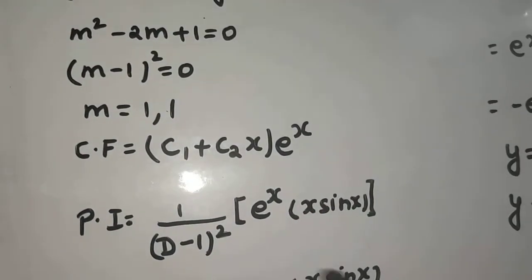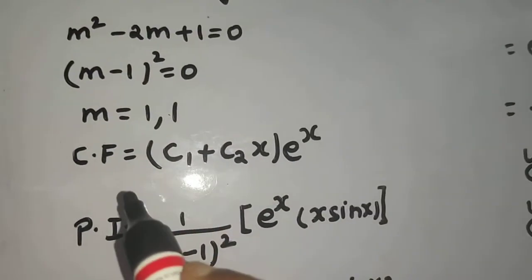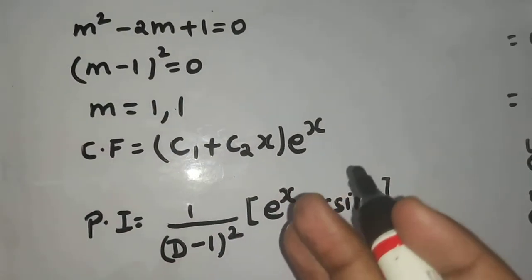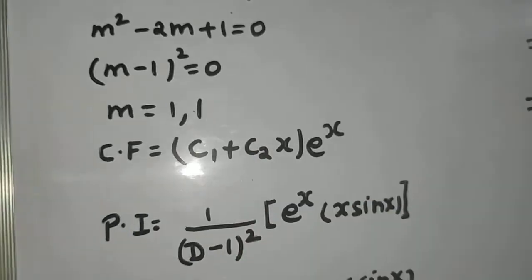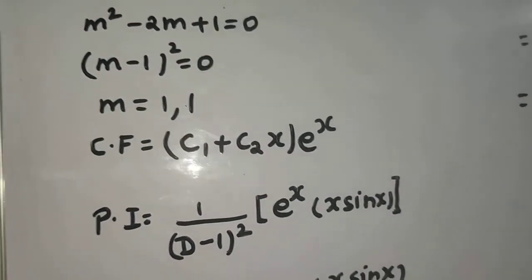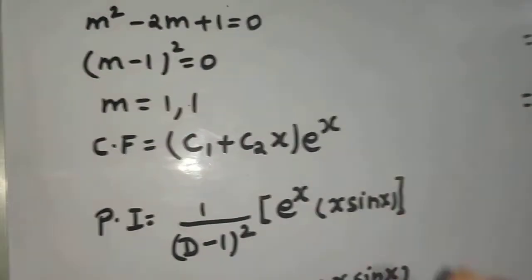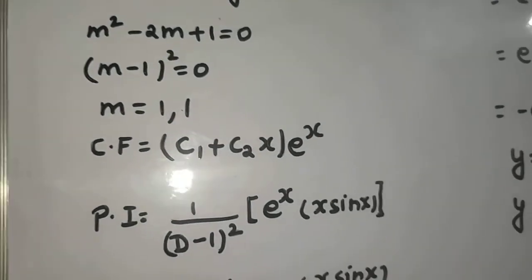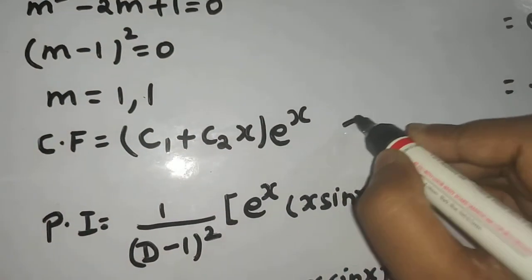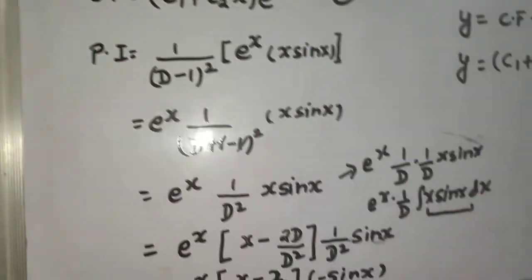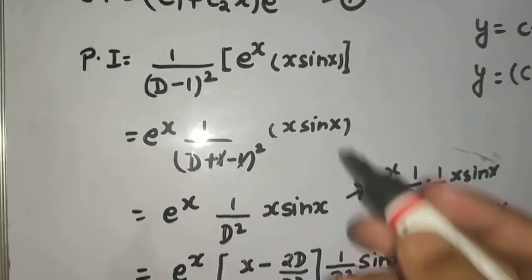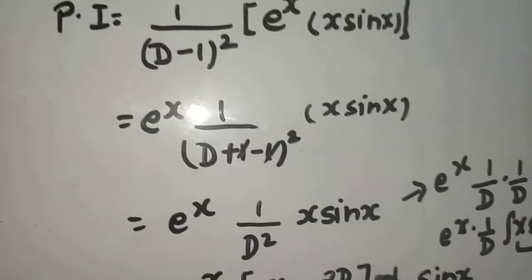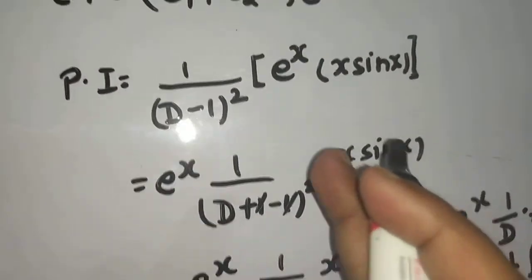To summarize the rules used: First, for repeated roots, CF = (c₁ + c₂x + c₃x²)·e^(repeated root · x) depending on multiplicity. Second, for e^(ax)·v, bring out e^(ax) and replace D by (D + a). Third, for x times a function v, use the x·v formula as demonstrated.